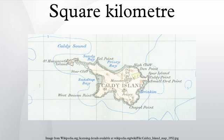Lück: the medieval city is roughly rectangular with rounded northeast and northwest corners. The maximum distance east to west is 1.36 km and north to south is 0.80 km. A perfect rectangle of these dimensions would be 1.36 × 0.80 = 1.08 km².